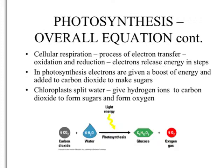Recalling cellular respiration, it's basically a process of electron transfer and oxidation-reduction reactions where electrons release energy in different steps. In photosynthesis, we use light to give a boost of energy to electrons so they can add carbon dioxide molecules together to make sugars. Carbon dioxide only has carbon and oxygen, so the hydrogens in glucose come from water. The chloroplast splits the water to give hydrogen ions to the carbon dioxide to form sugars, and as a byproduct, oxygen molecules are released.